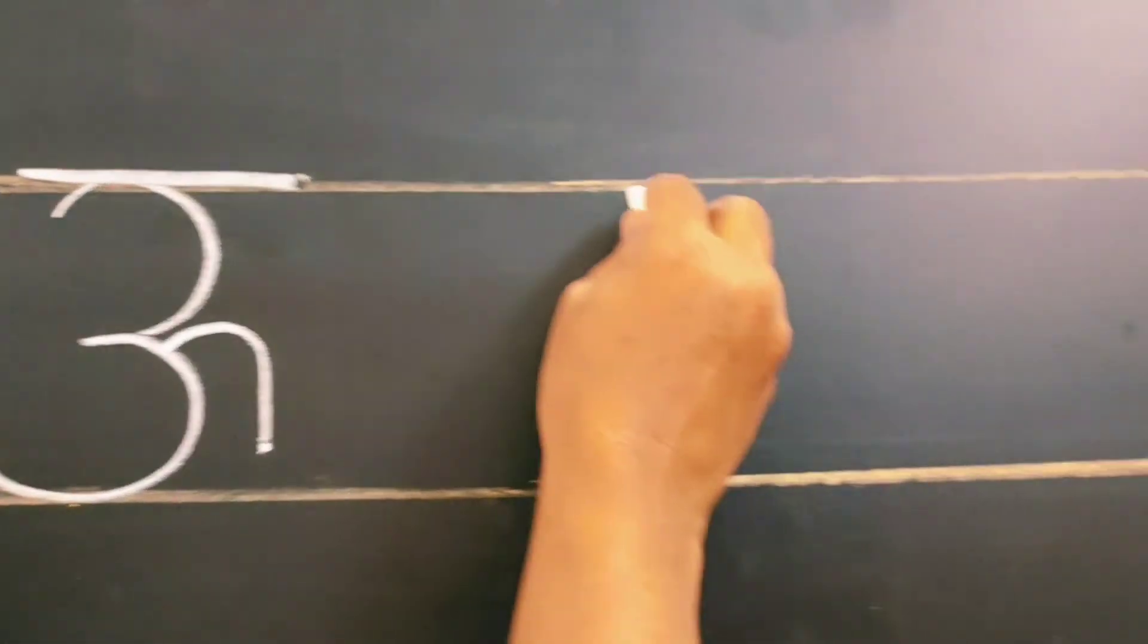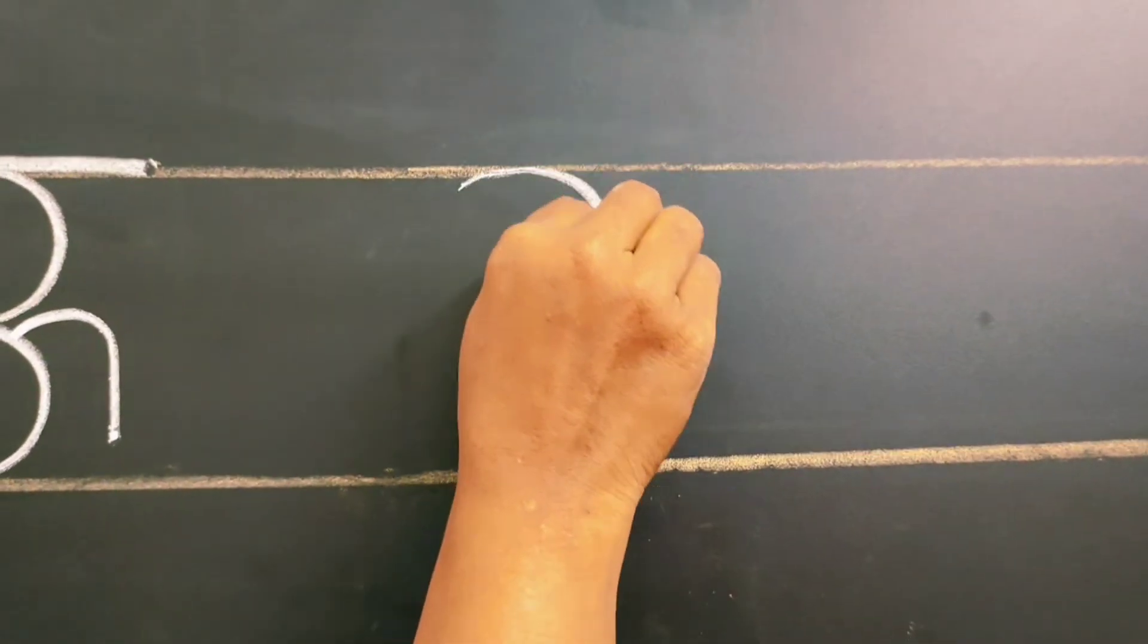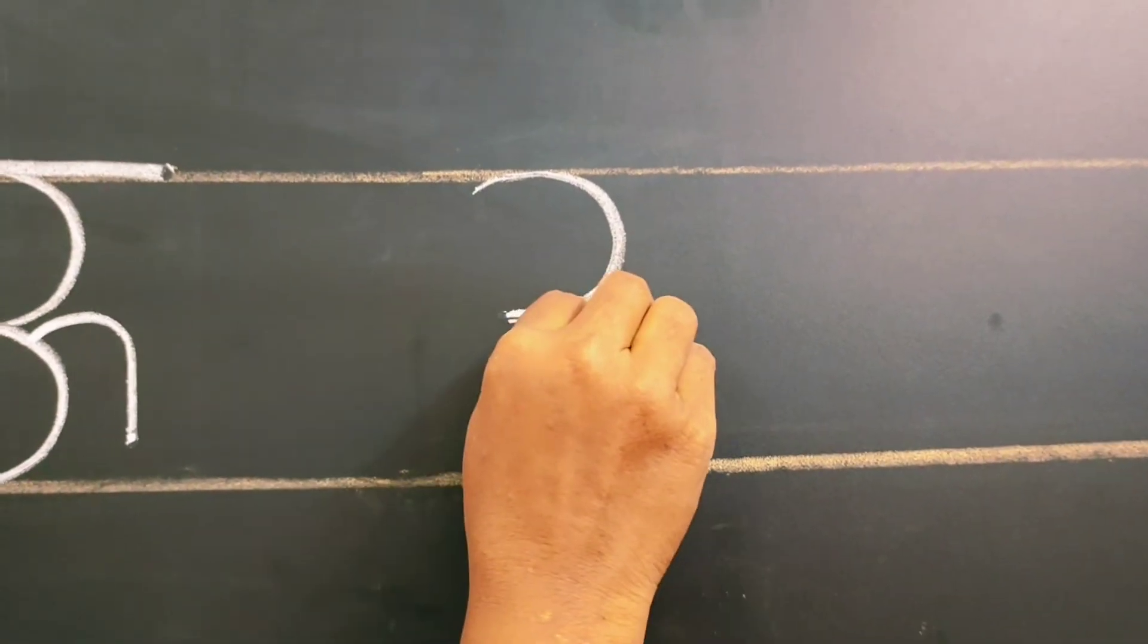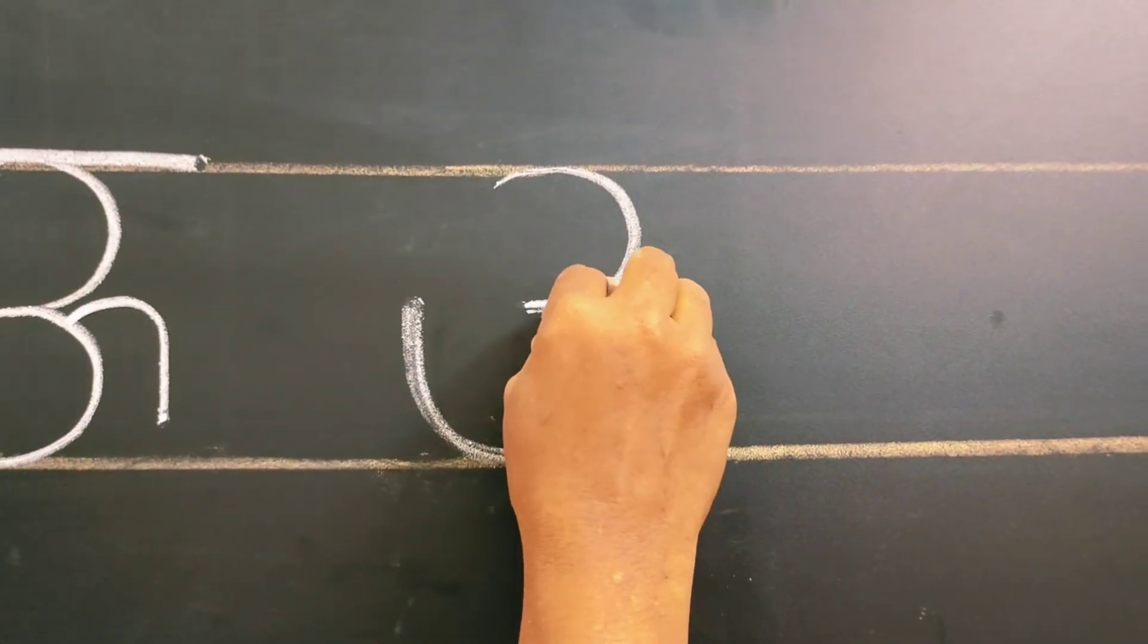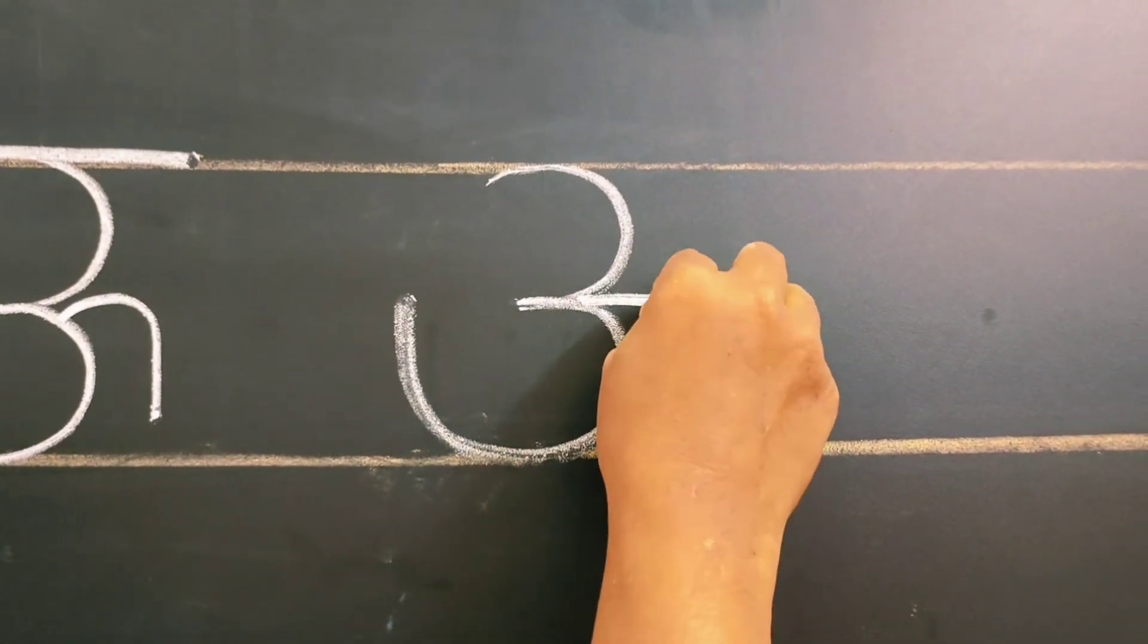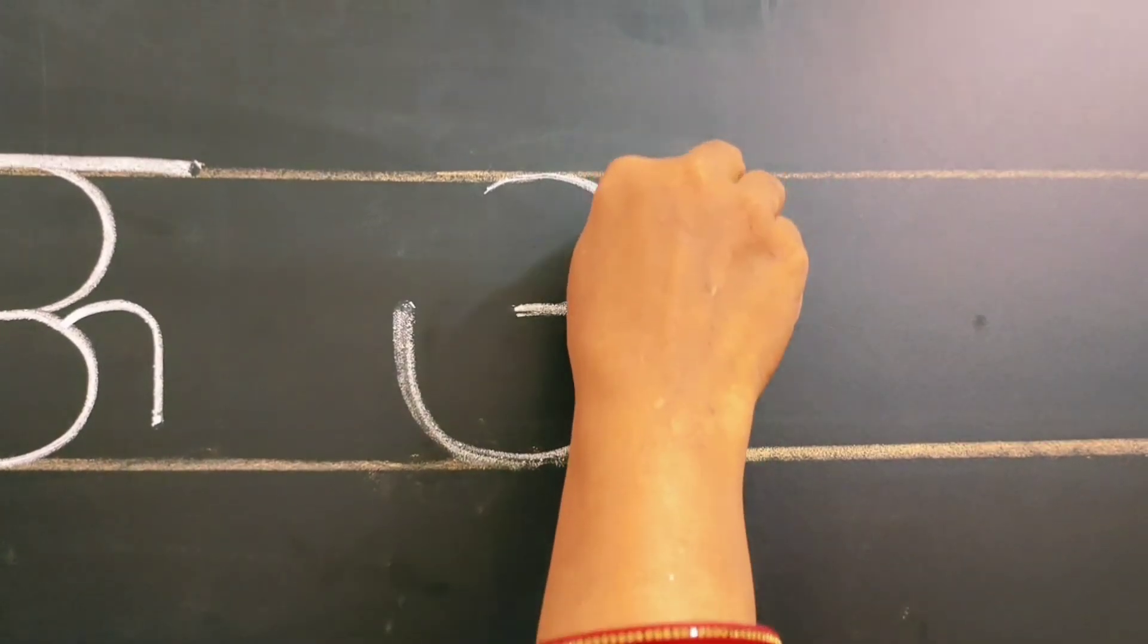And next a. How to write? Left open curve. Little down also the left open curve. Little up. And next a.